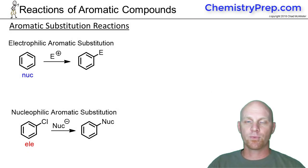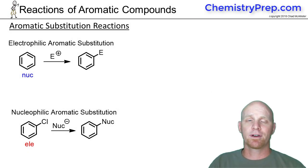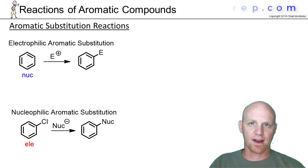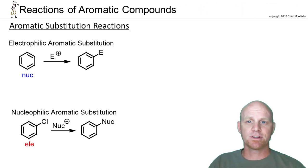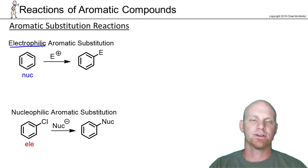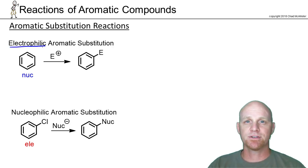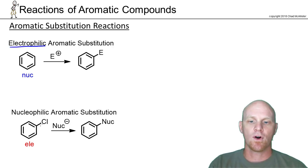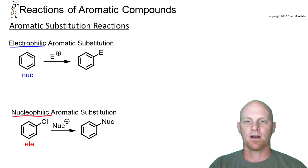In this chapter on the reactions of aromatic compounds, we are going to spend the most time on aromatic substitution reactions. In principle, there are two types. The first type we'll call electrophilic aromatic substitution. The second type we will call nucleophilic aromatic substitution.